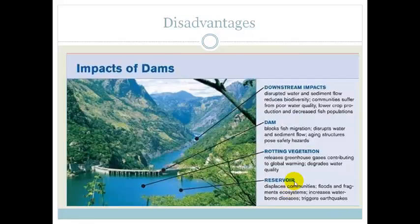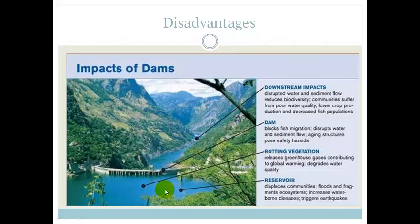Disadvantages — this is really important so we need to go through it nice and slowly. First of all, the impacts downstream: you get disrupted water and sediment flow which reduces your biodiversity. It changes the biodiversity in ecosystems both downstream and upstream. The dam blocks the water so fish migration is an issue, it disrupts the water flow and can cause structures to age, which causes safety hazards. You get rotting vegetation if dams aren't properly managed and maintained, which releases greenhouse gases and contributes to global warming.